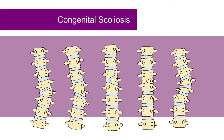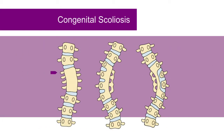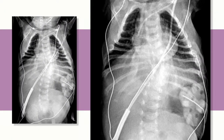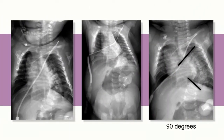Congenital scoliosis is present if the spinal bones are misshapen at birth. The term congenital implies that the bones failed to form properly in the first six to eight weeks of gestation. The bones may be completely or partially separated and incompletely formed. Certain types of congenital scoliosis are more likely to worsen with growth. A combination of misshapen and partially glued together spinal bones can produce a 90-degree scoliosis within the first year of life.